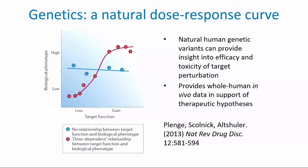That is the idea that human genetics provides a natural dose-response curve that we can use to explore the relationship between the levels of a particular potential target or gene product and a disease phenotype. For some genes that will be flat, indicating no association with phenotype. In other cases, we can use both loss-of-function and gain-of-function variants to explore the precise relationship between the dose of that gene across all tissues of a human across that entire lifespan and its association with human disease.